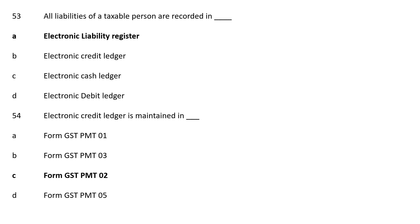All liabilities of a taxable person are recorded in: Option A: Electronic Liability Register; Option B: Electronic Credit Ledger; Option C: Electronic Cash Ledger; Option D: Electronic Debit Ledger. The correct answer is Option A, Electronic Liability Register. All liabilities of a taxable person are recorded in the Electronic Liability Register.